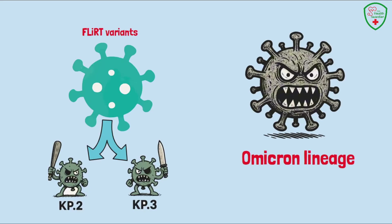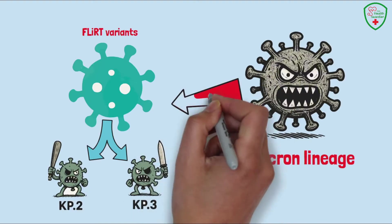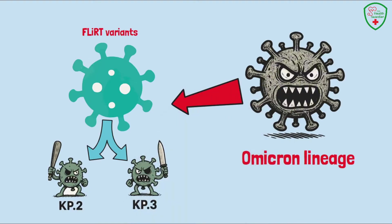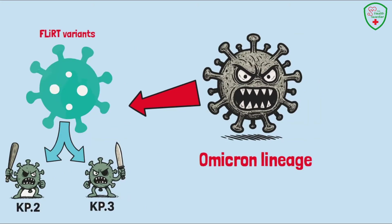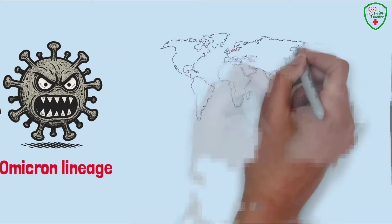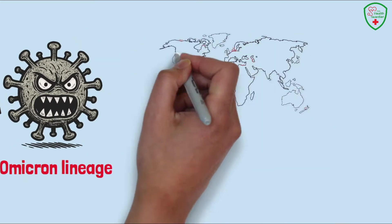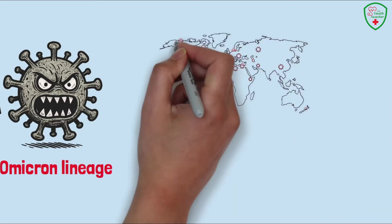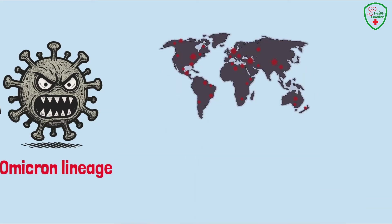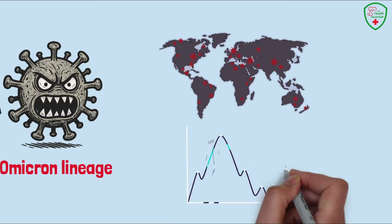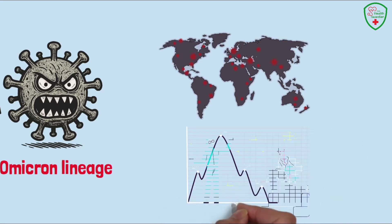Experts say their spike protein mutations, like those seen in the F456L and R346T spots, help them latch on to cells more effectively, making them spread faster in crowded places. While they don't seem to cause more severe disease, their ability to dodge some immunity from past infections or vaccines is raising eyebrows.